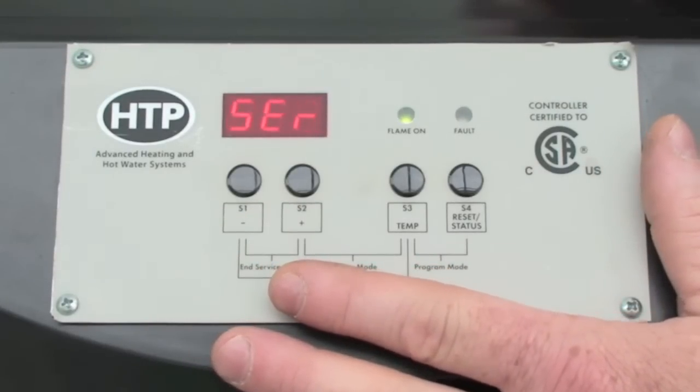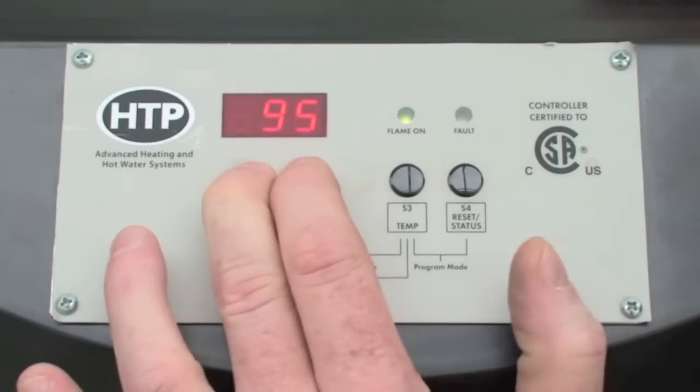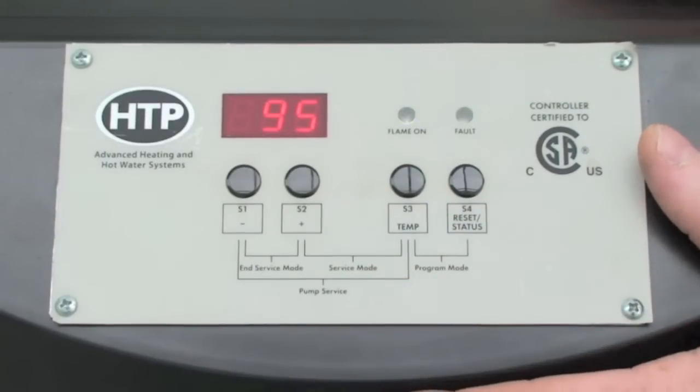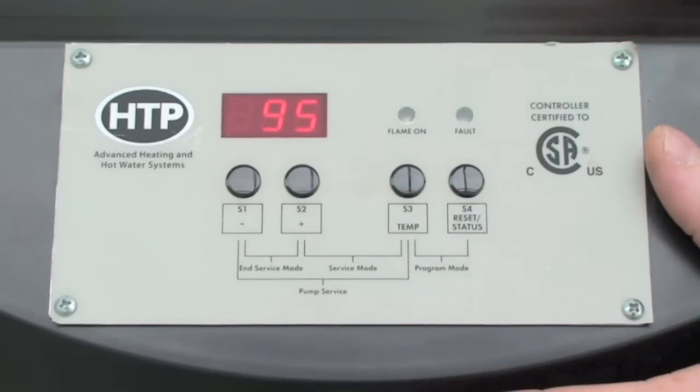Once you have completed your testing, simply press S1 and S2 simultaneously, and control goes back to normal operation. You have exited the service menu.